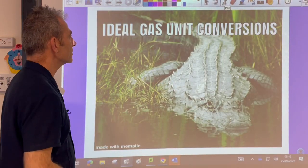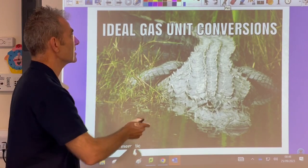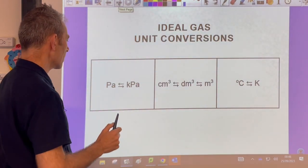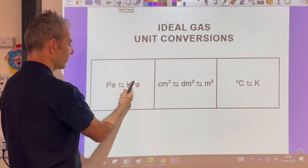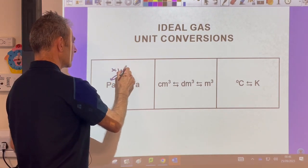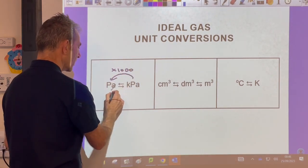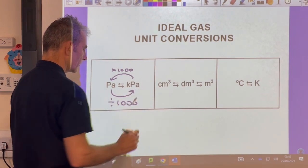Quick video on ideal gas unit conversions - this catches students out all the time. We'll start with pressure. If you've got one kilopascal and you want to put it into pascals, you multiply by a thousand. Going the other way, pascals to kilopascals, you divide by a thousand.